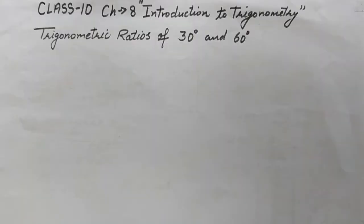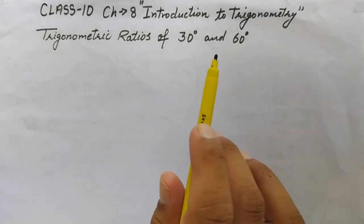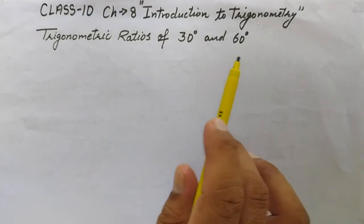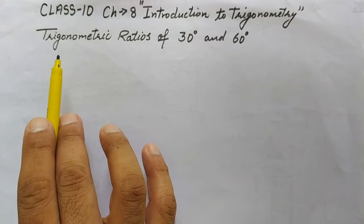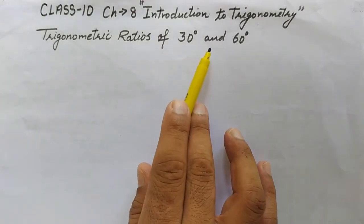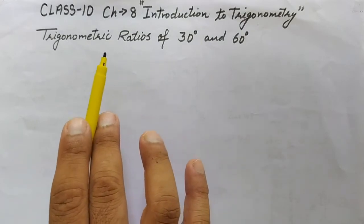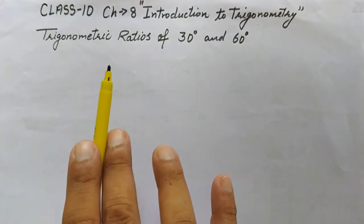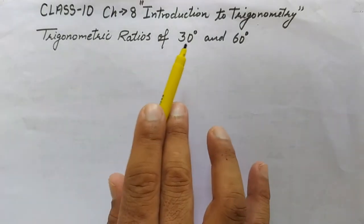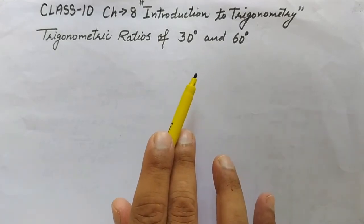Hello dear students, welcome to this YouTube channel. Let's do this question from Class 10, Chapter 8: Introduction to Trigonometry. The question is about trigonometric ratios of 30 degrees and 60 degrees. We need to find the values of all t-ratios at 30 degrees and 60 degrees geometrically.